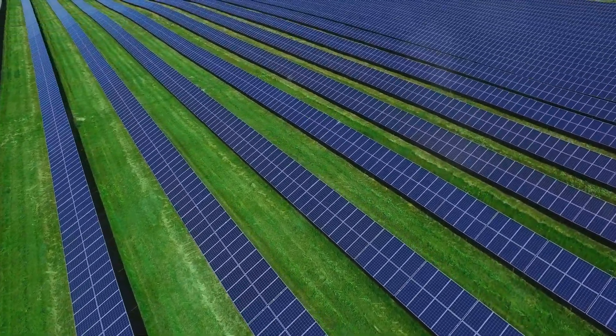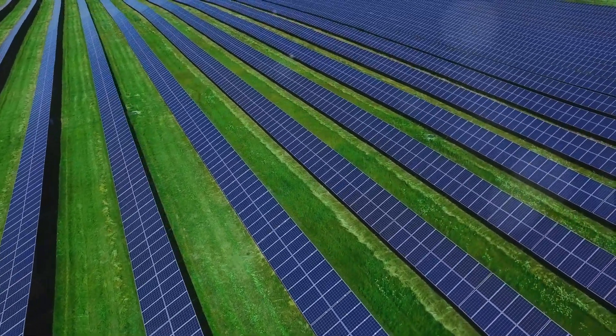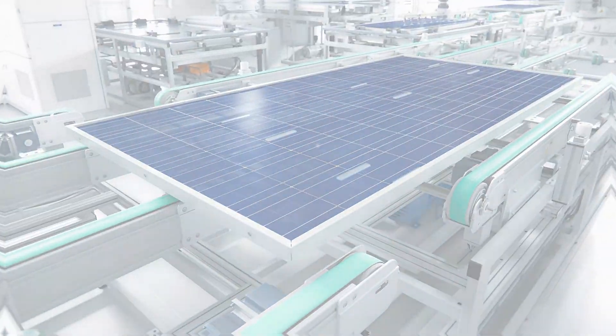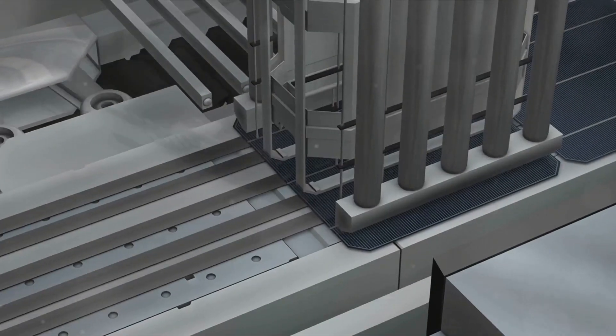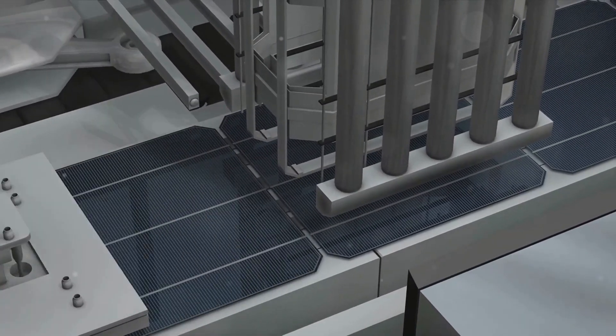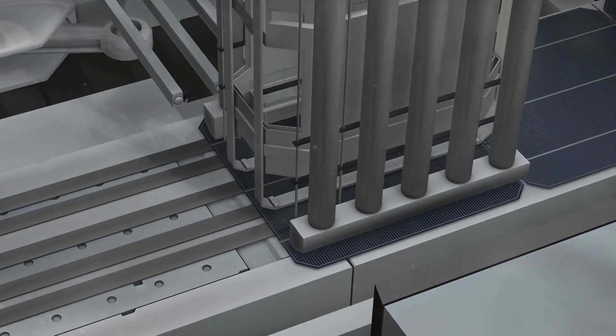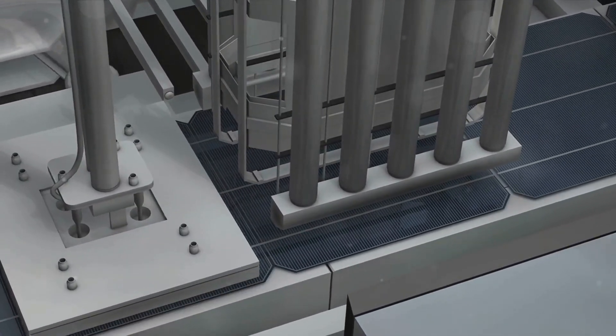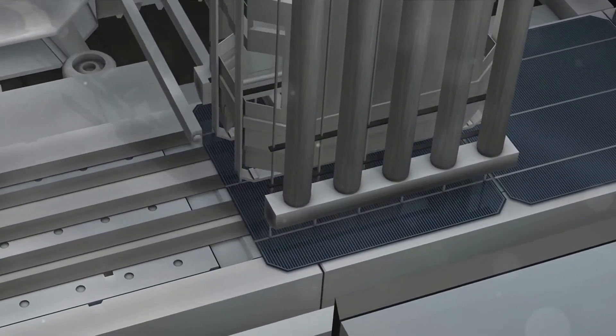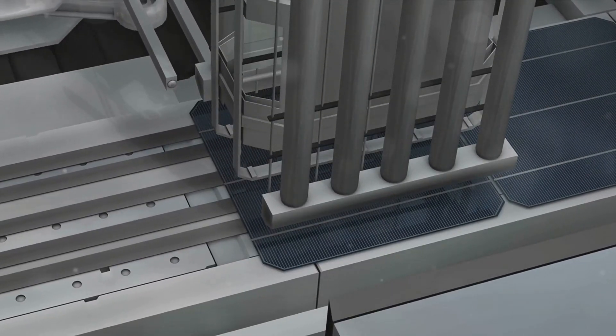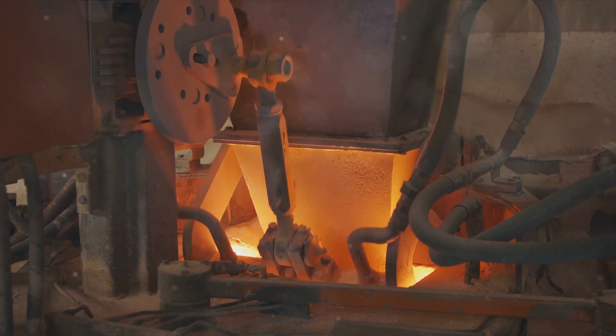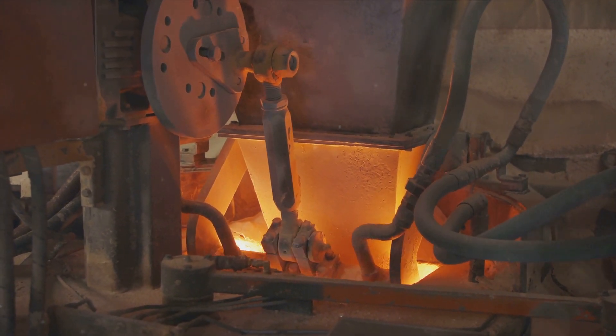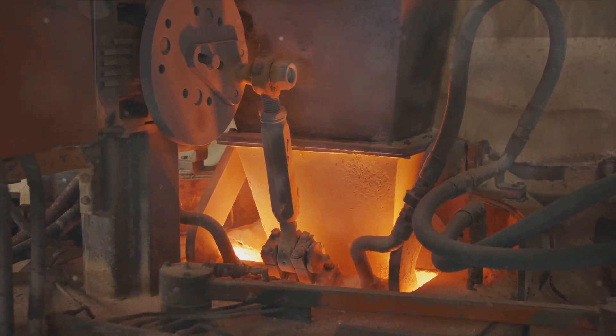Stay with us as we delve into the fascinating process of how solar cells are made. The journey of a solar cell begins with the procurement and purification of silicon. Silicon, a semiconducting material, is predominantly derived from quartz sand. It's an ideal choice for solar cells, thanks to its unique properties and its wide availability. Let's delve into the first phase of this journey, the extraction of silicon.